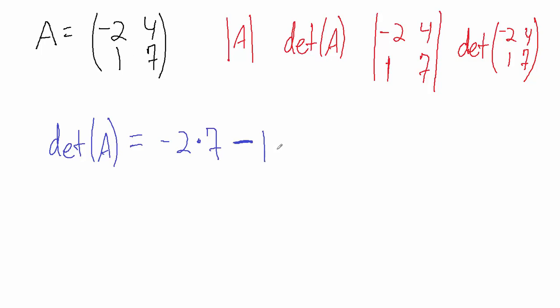So again, that's always the top left number times the bottom right number, -2 times 7 in this case, and then minus the bottom left number times the top right number, 1 times 4 in this case. So -2 times 7 is -14, and then we have minus 1 times 4 in this case.